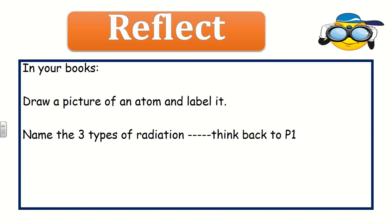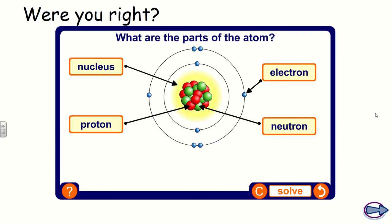Pause the video, give yourself two minutes to do that. Hopefully you've managed it. Here are the answers: an atom has a nucleus in the centre made up of protons and neutrons, surrounded by electrons which orbit around the nucleus. The three types of radiation are alpha, beta, and gamma. Don't worry if you didn't recall them — there'll be a later lesson in this unit all about them.